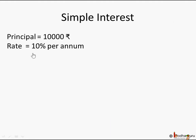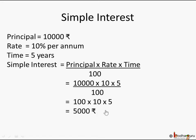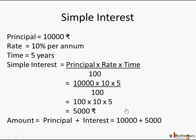For this problem with 10,000 rupees, 10% rate, and 5 years, it will be 10,000 into 10 into 5 by 100, which gives 5,000 rupees. Our table also gave us the same value when we calculated the interest for each year and added it up. So the total amount is 10,000 principal plus 5,000 simple interest, which is 15,000 rupees.